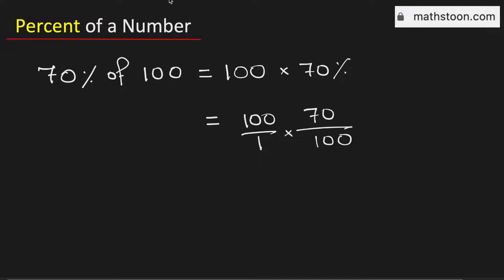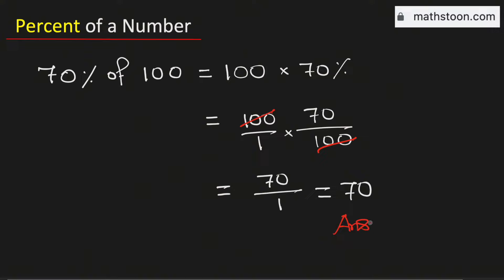Now cancel the common 100, so we are left with 70 in the numerator and 1 in the denominator. This is the same as 70. Therefore, 70 percent of 100 is equal to 70, and this is our final answer.